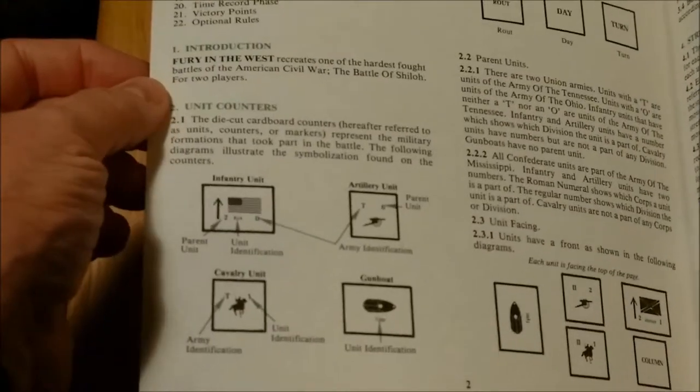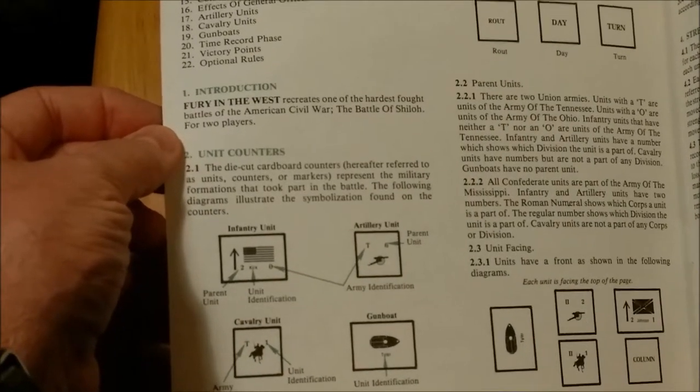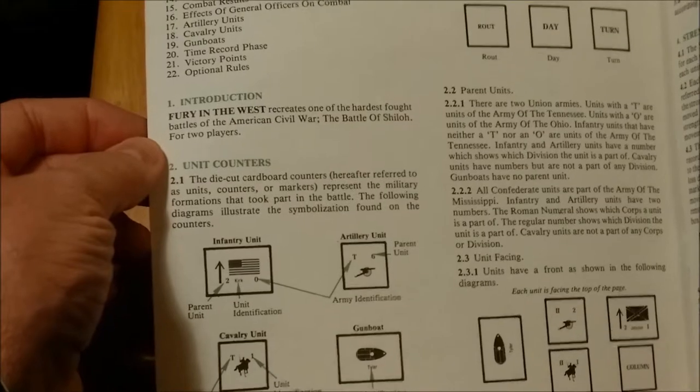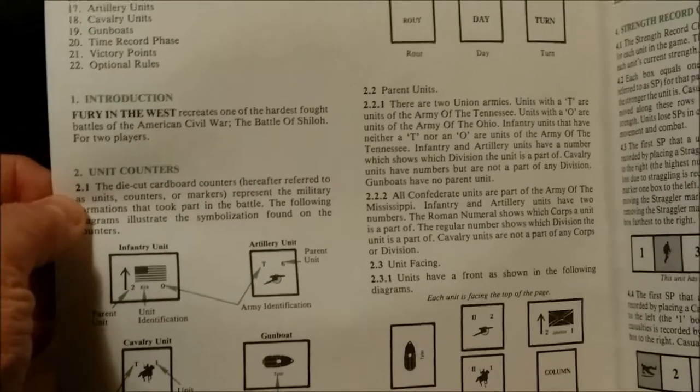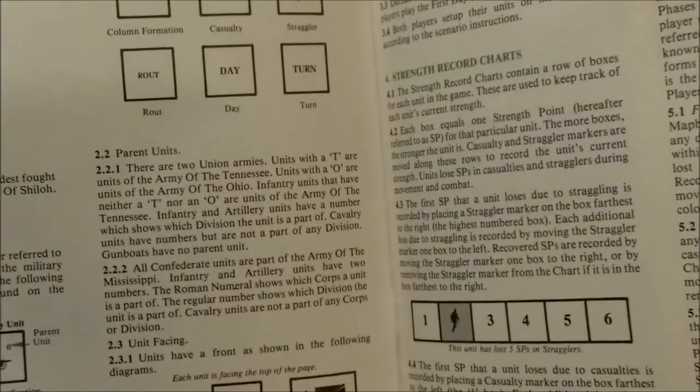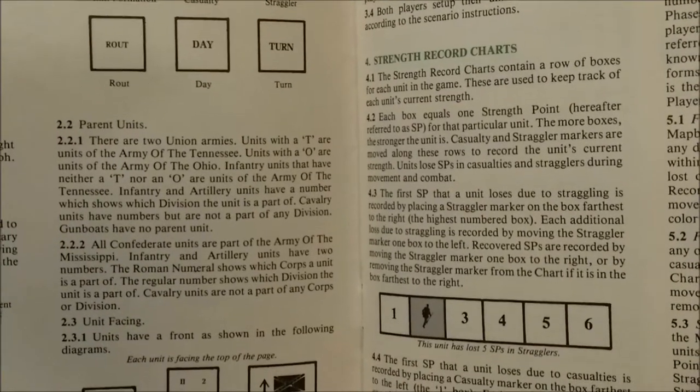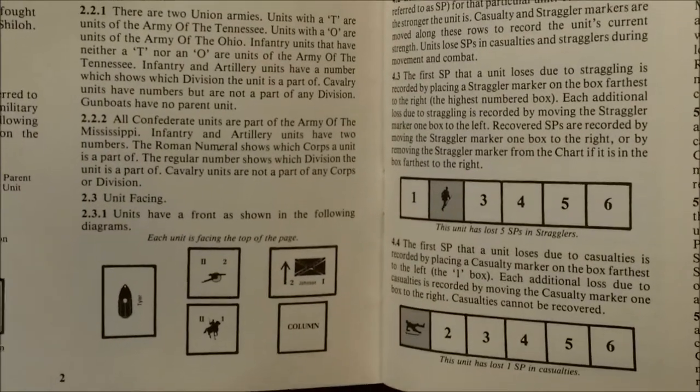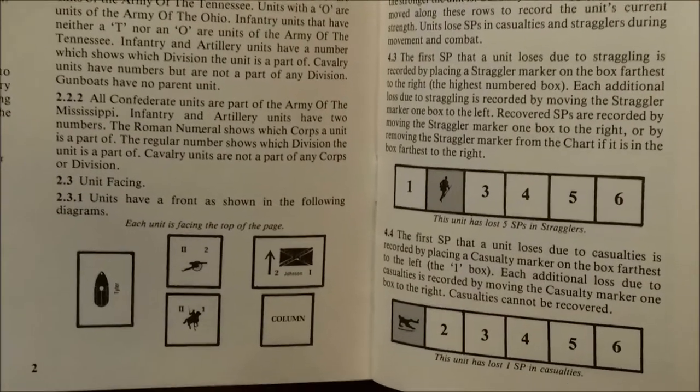It gives a breakdown of the counters and what the symbols on each counter represents. The game uses strength record charts in which you move a marker up and down a track indicating stragglers and combat losses.